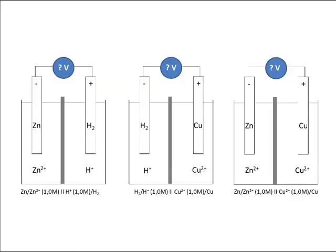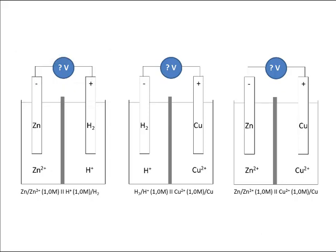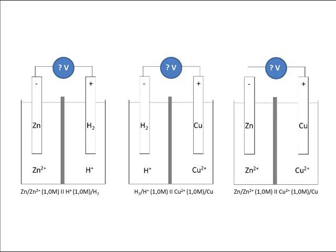Do you know how to find out what the potential difference would be between the zinc and the hydrogen electrodes if these were standard conditions? You have that information — do you know where to find it? The same question applies to the hydrogen and the copper cell. If you do know where to get this information, write it in and then try to deduce what the potential difference would be between the zinc and the copper cell.